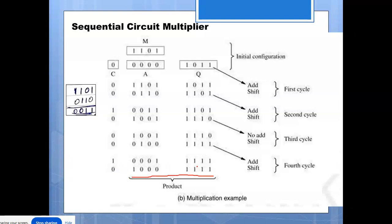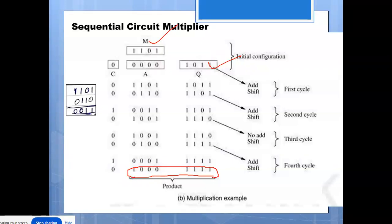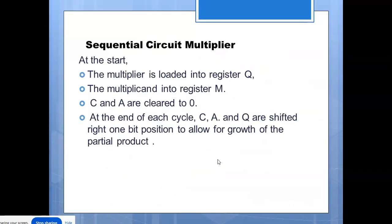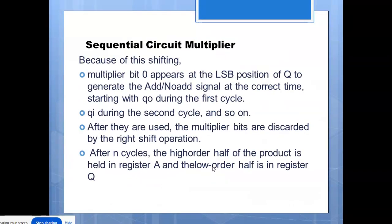You might wonder how many bits the output will be. We are taking a 4-bit multiplicand and a 4-bit multiplier, so n plus m equals 4 plus 4 equals 8. The result will be 8 bits. The A and Q registers together form the answer. You can convert this to decimal and verify. This completes the operation of the sequential multiplier. Thank you so much.